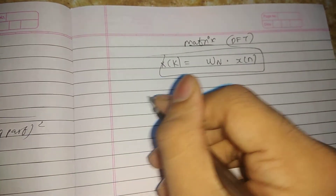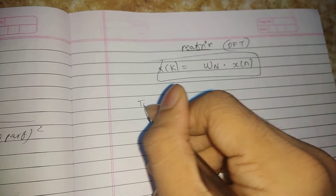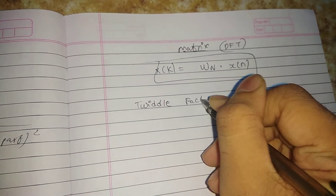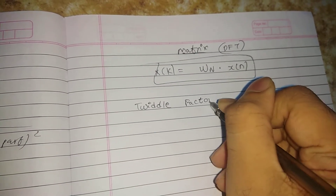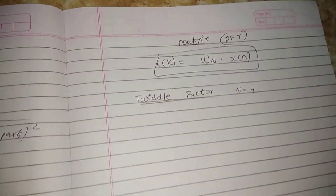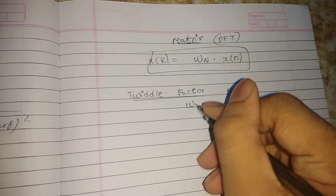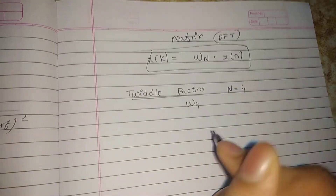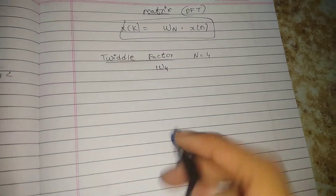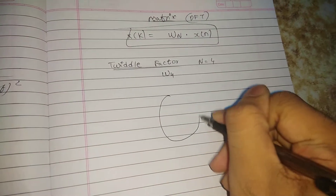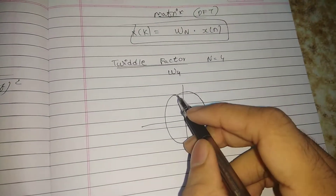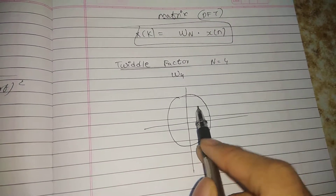We will discuss the twiddle factor for N=4, that is the 4-point twiddle factor W4. To get the matrix values, first draw a unit circle.